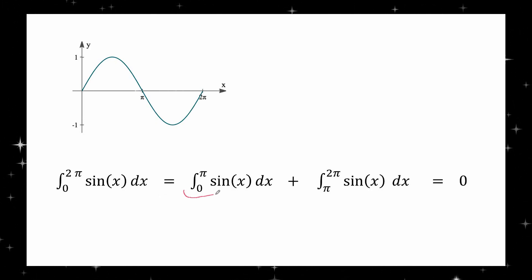The first integral is the integral of sine from 0 to π, and the second integral is the integral of the same function, but now from π to 2π. We know that the first integral is equal to 2, the second integral is -2, so the initially given integral is 0.